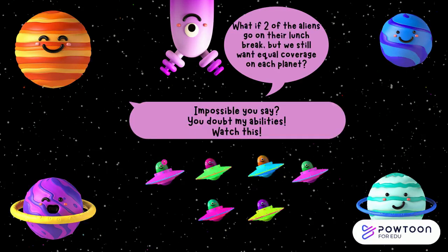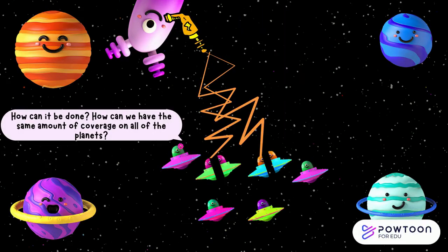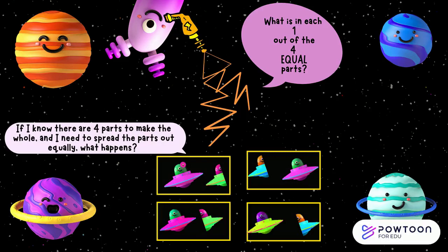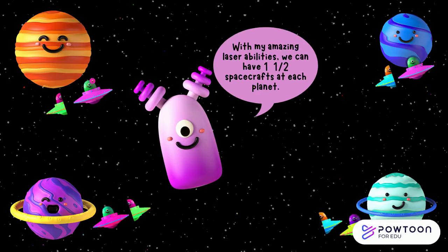What if two of the aliens go on their lunch break, but we still want equal coverage on each planet? Impossible, you say? You doubt my abilities. Watch this. How can we have the same amount of coverage on all of the planets? What is in each one out of the four equal parts? If I know there are four parts to make the whole and I need to spread the parts out equally, what happens? Pause the video and discuss it with a partner. With my amazing laser abilities, we can have one and a half spacecrafts at each planet.